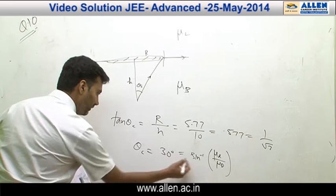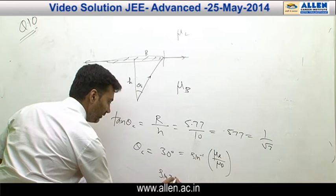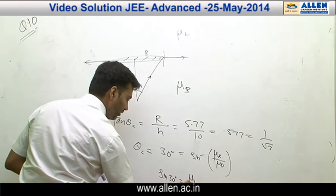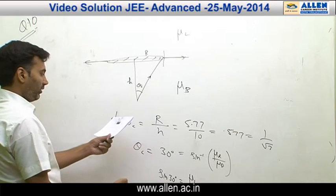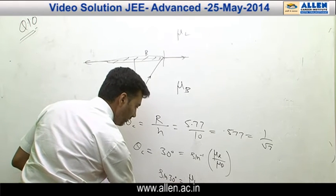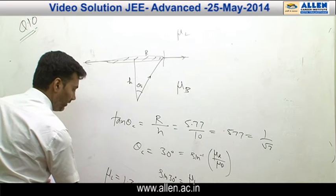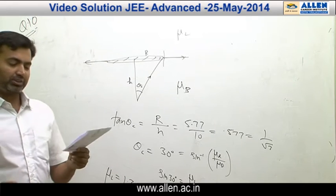the liquid. So you have sine 30 equals mu rare, that's mu liquid, upon mu dense, that is for the block which is 2.72. Solve this, you have mu l is 1.36. That's option C.